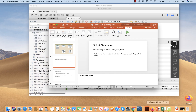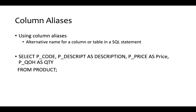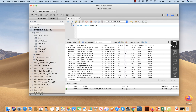Now I'm going to talk about another important concept called column aliases. The idea is that you give an alternative name for a column or table in a SQL statement. For example: SELECT p_code, p_description AS description, p_price AS price, p_qoh AS quantity FROM product. When you run this query, the column names will be changed in the output.